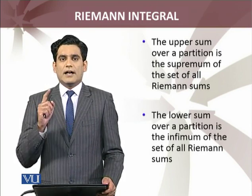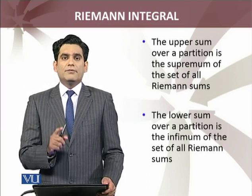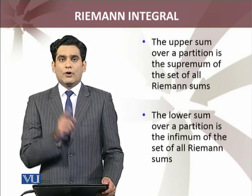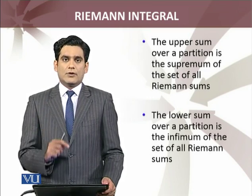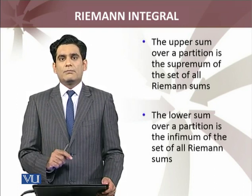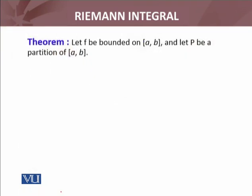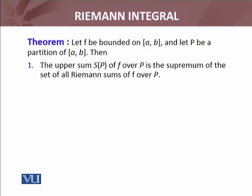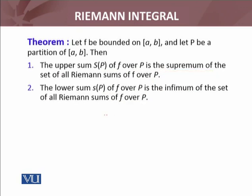Now I am going to show that the upper sum for a particular partition is in fact the supremum of all Riemann sums over that partition, and vice versa for the lower sums — the lower sum is the infimum of all Riemann sums for that partition. So let f be bounded on [a,b] and let P be a partition of [a,b]. Then the upper sum S(P) of f over P is the supremum of the set of all Riemann sums of f over P, and the lower sum s(P) is the infimum of the set of all Riemann sums of f over P.